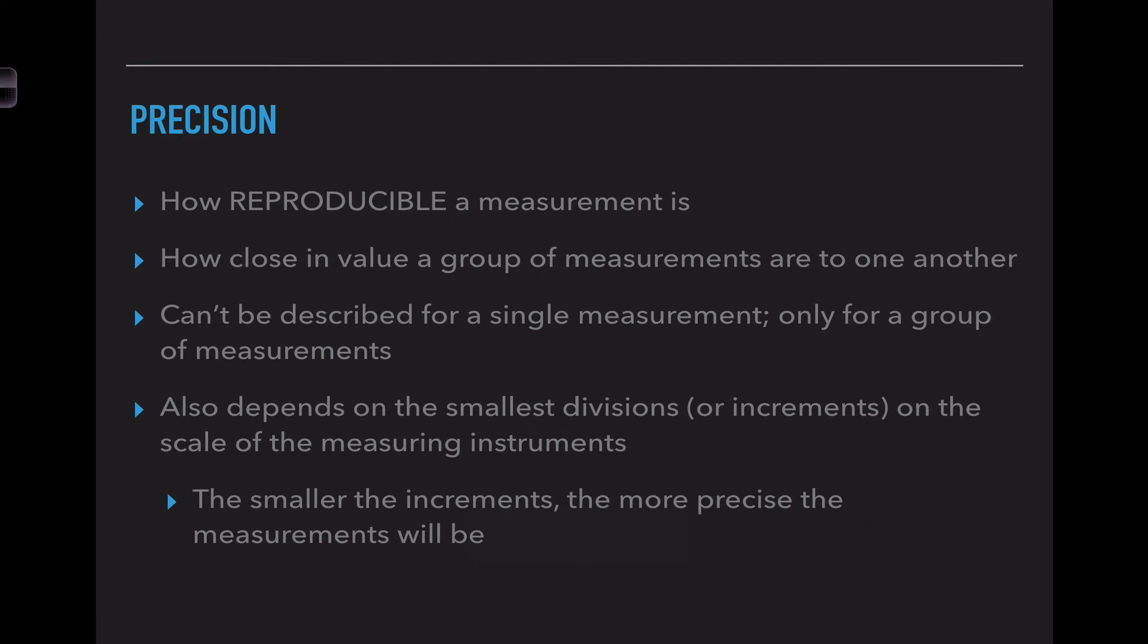On the other hand, precision is how reproducible a measurement is. If we take the same measurement or the same family of measurements multiple times, do we fall in a small range? How close is a group of measurements to one another? We cannot use a single measurement to describe this - we may only use a group because the whole idea is how close to each other are our measurements. This depends on the smallest divisions on the scale of our measuring instruments. The smaller the increments, the more precise our measurement can be. Precision is how reproducible is a measurement or how close in value is a group of measurements.